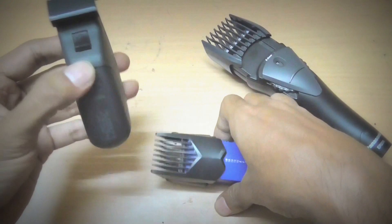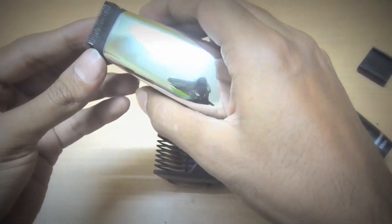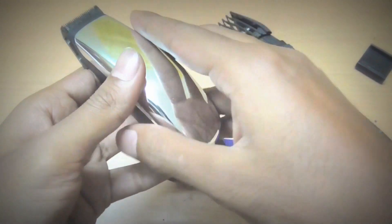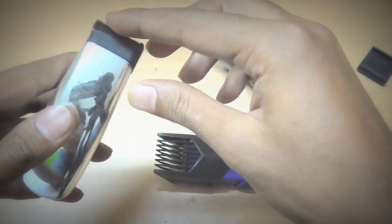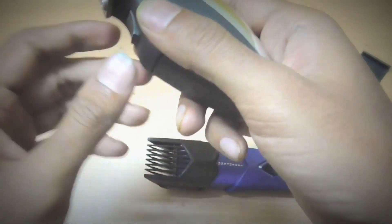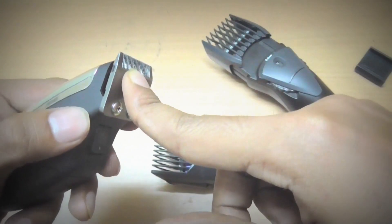And now coming back to this Wahl one. It is very light and very small. So if you have very large hands, then it might be a little uncomfortable for you to hold it. But as you can see, it doesn't come with any adjustment, but what I really like is that it has got very small blades. So if you prefer a clean shave, then this is a perfect product that you should have.